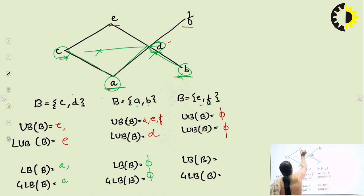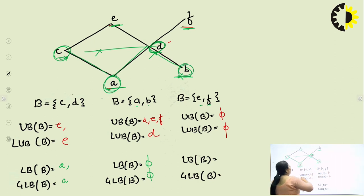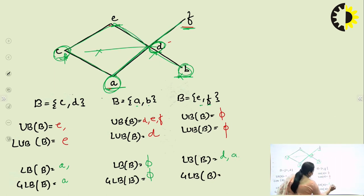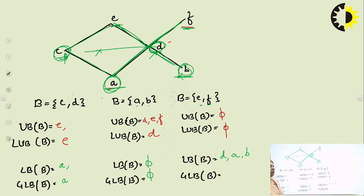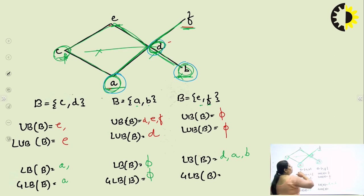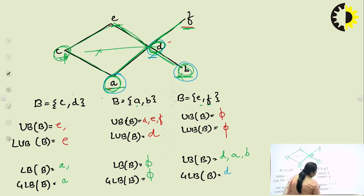For lower bound of {A, B}: no elements are below A and B, so the lower bound is empty (φ), and the greatest lower bound does not exist. For lower bound of {E, F}: candidates are A, B, C, and D. C is related to E but not F — so C is out. D is related to both E and F — so D is in the lower bound. A is related to both E and F — so A is in the lower bound. B is related to both E and F — so B is in the lower bound. Lower bounds are A, B, D. D is in the highest position among them, so the greatest lower bound is D.